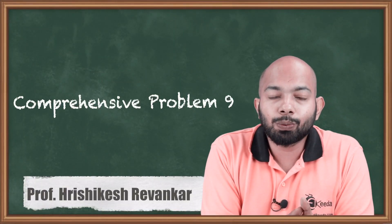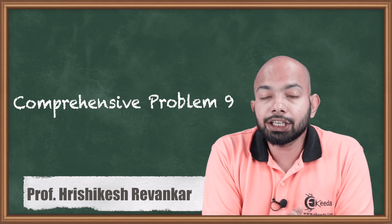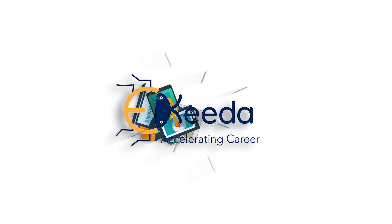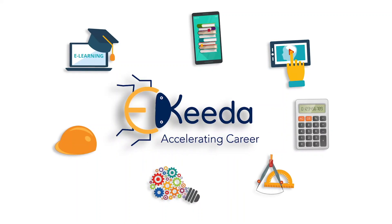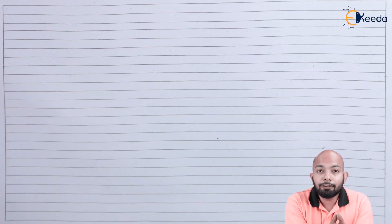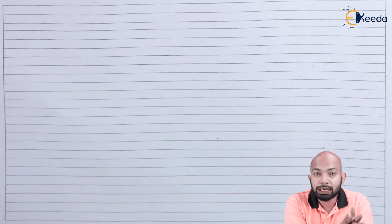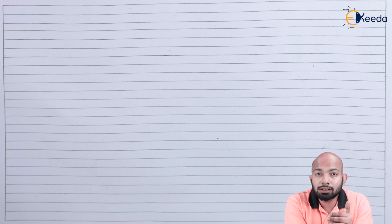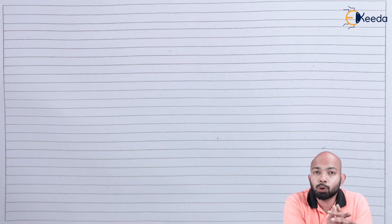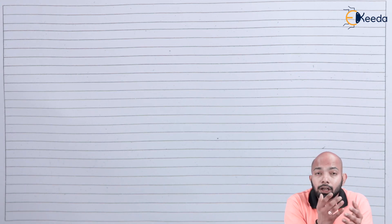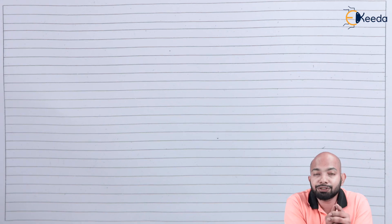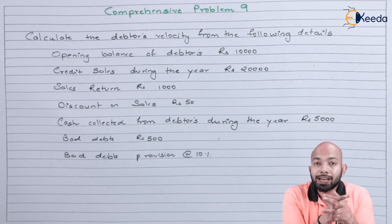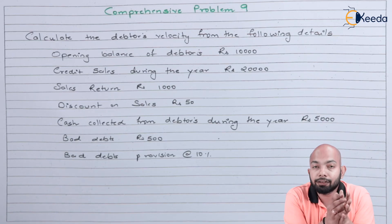Hello friends, we will be discussing another illustration related to the comprehensive problem of ratio analysis. Now that we have more details on ratio analysis and the ways to calculate the ratios, we will be solving some more illustrations related to the comprehensive part of this chapter. We will be understanding certain illustrations whereby the pre-made format of the balance sheet and profit and loss statement is provided, and on that basis we will calculate the other details. Let's figure out what the illustration mentions here.